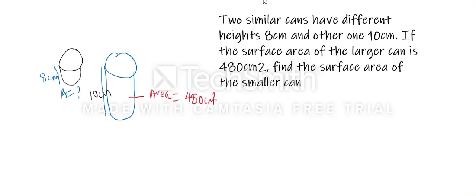These two shapes are said to be similar. If two shapes are similar, their corresponding sides are in the same ratio. When calculating a missing area, we need to calculate the area scale factor. Before we calculate the area scale factor, we need to find the ratio of the corresponding sides — that is, the ratio of their heights.